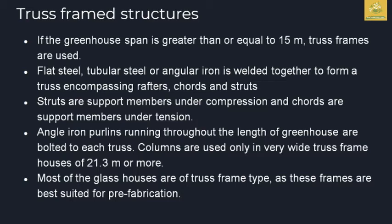The truss frame members include rafters, cords, and studs. Studs are compression members in the greenhouse. Cords are tension members and support members. Angular iron is used throughout the greenhouse and bolted at connections at the angular iron center. Columns support wide truss frames over 21.3 meters distance. Most glass houses use truss family structures.